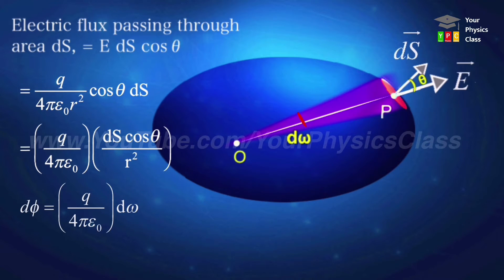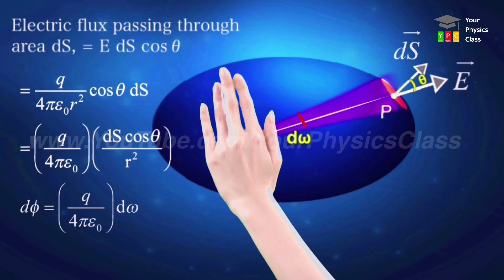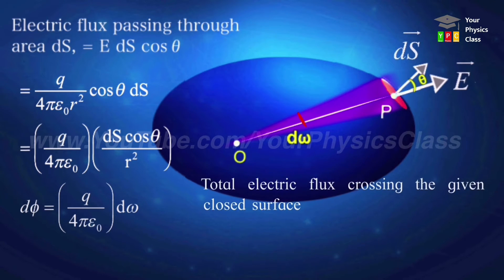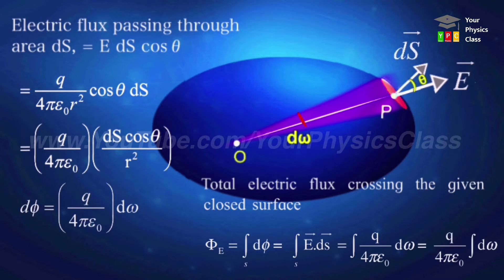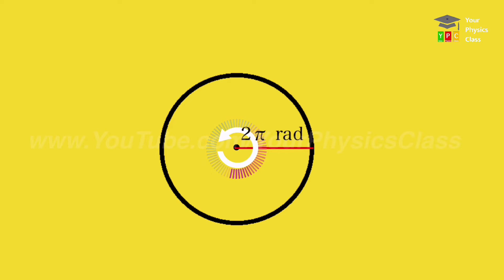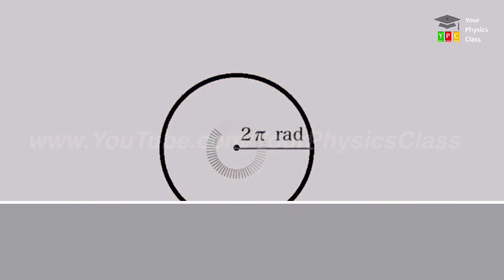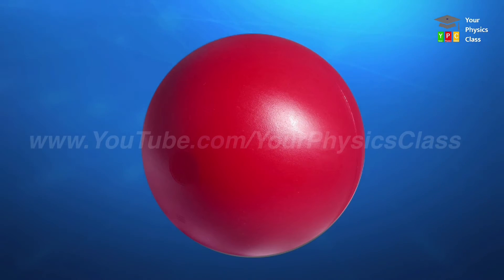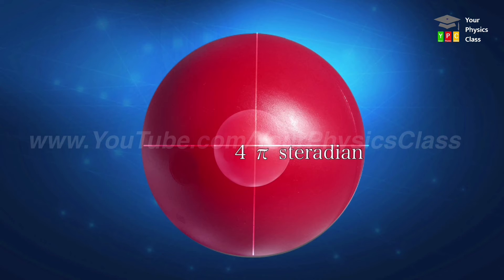Now we need to find total flux through the entire surface, so for this we need to integrate this flux over the surface S. See, in integration, q upon four pi epsilon zero is constant, so it goes outside the integration sign. And integration of d-omega that we get is the total angle. Let me explain this. If I take a point and draw a circle around it, at this point the plane angle is two pi radians. But instead of a circle, if I consider a sphere, then at the center of the sphere my solid angle is four pi steradians.